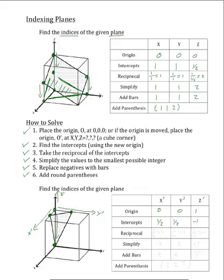Now our next step is to take the reciprocals of these numbers. We will take 1 over the x-prime intercept, which is ½, and that will be 2. We will take 1 over our y-prime intercept, which is ½, and that will equal 2 as well. We will take 1 over our z-prime intercept, which is –1, and that will equal –1. As you can see, 2, 2, and –1 are already at their smallest possible integer values, so we do not need to change them. Replacing any negative signs with bars, both 2s remain the same, but –1 will become bar-1. Adding the round parentheses, our answer is (2 2 bar-1). That is how you find the indices of a plane. For further help on this topic, make sure to visit our YouTube channel, Materials Concepts. Thanks for watching.